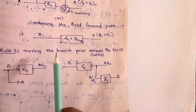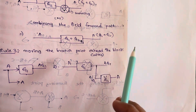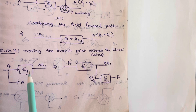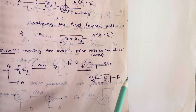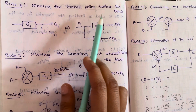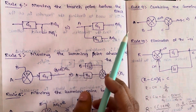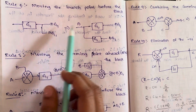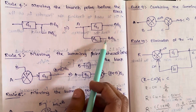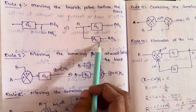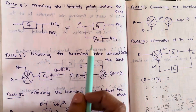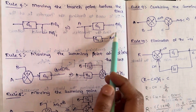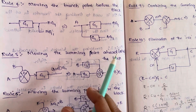Rule 3 is moving the branch point ahead of the block — that is, after the block. If we have G1 and we move the branch point ahead, we get 1 by G1. This does not affect the overall output of the system. Rule 4 is moving the branch point before the block. If it was after the block and we move it before, we get G1 itself, so the output becomes A·G1 instead of just A.